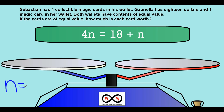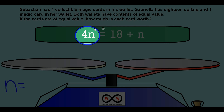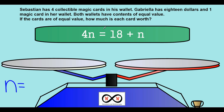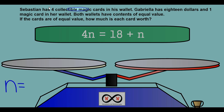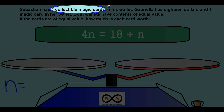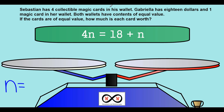On the left side of the equation we have 4n. Where does that come from? Think back to the problem — Sebastian has four collectible magic cards in his wallet. So we can see that he has 4 times n. In this case, n is the value of each card, and he has four cards in his wallet. That's the left side of the equation.